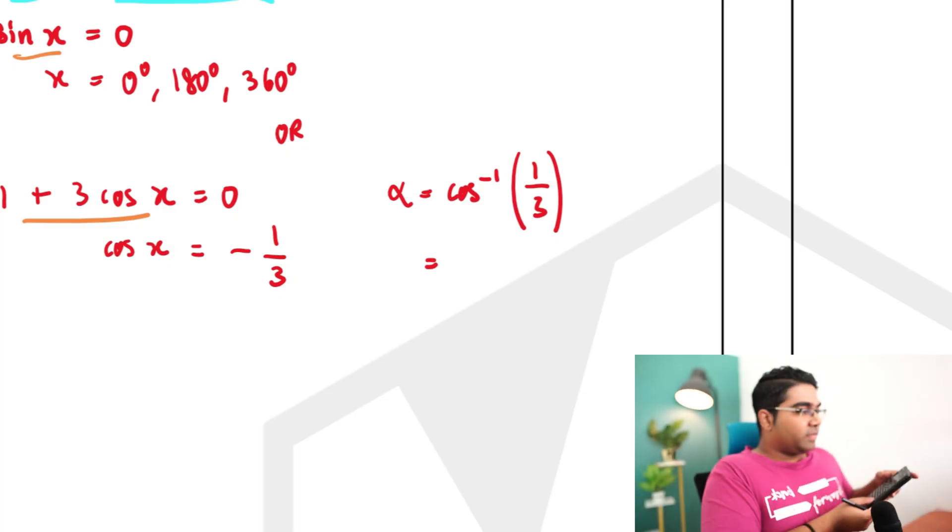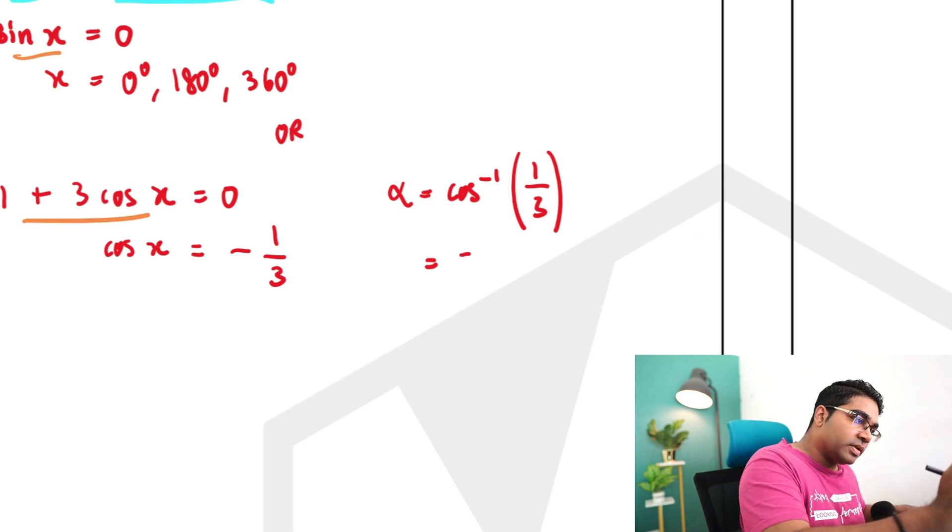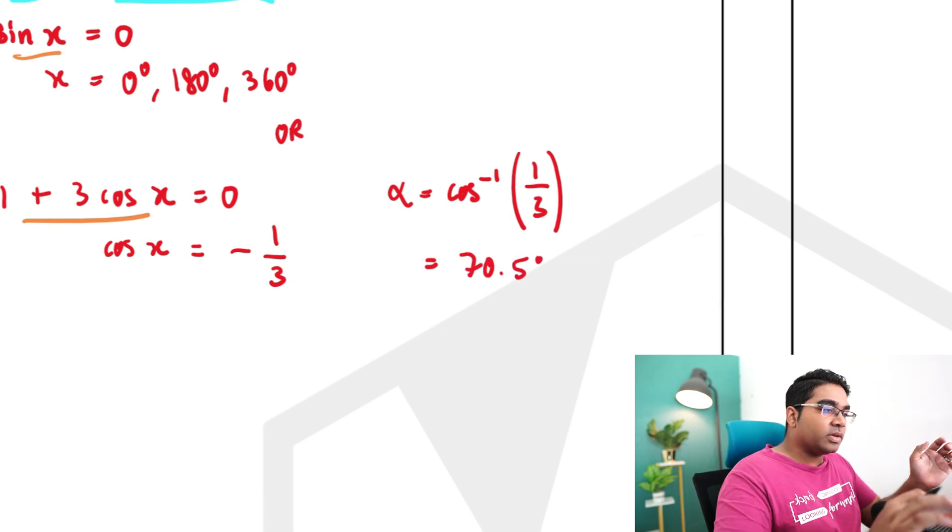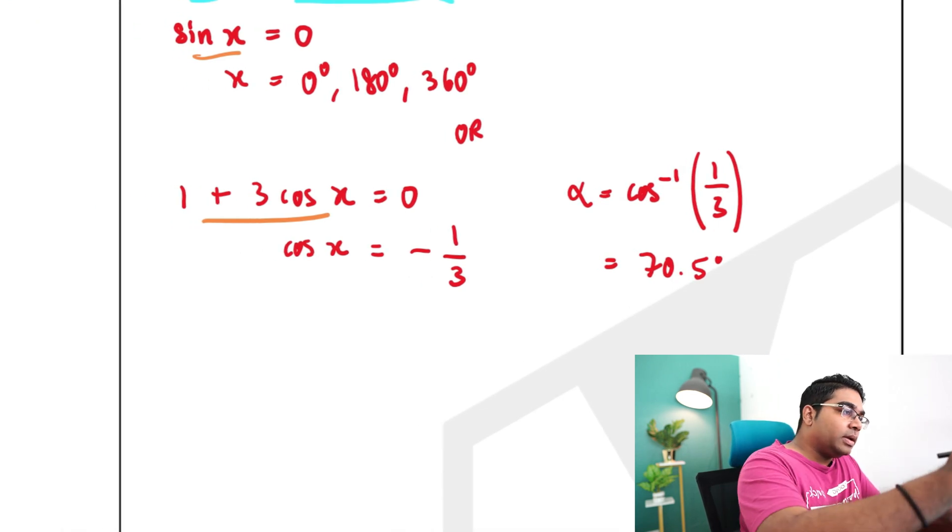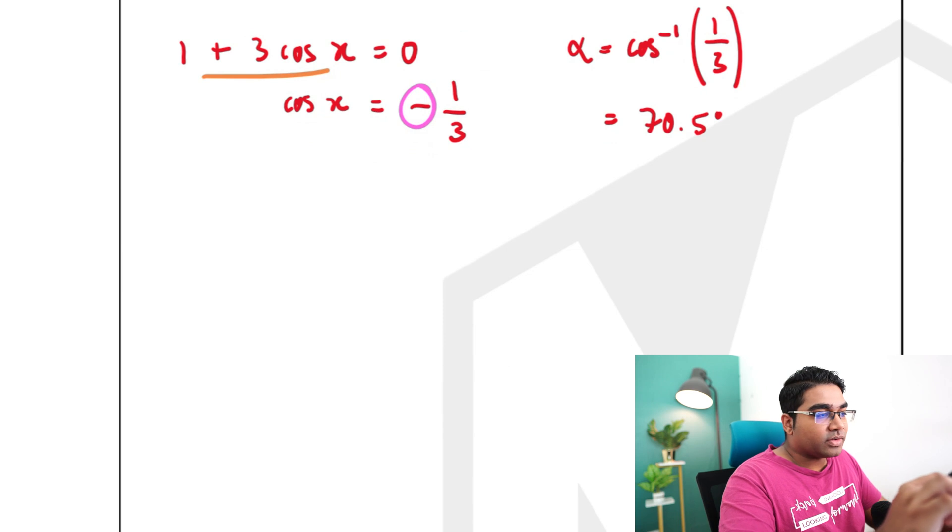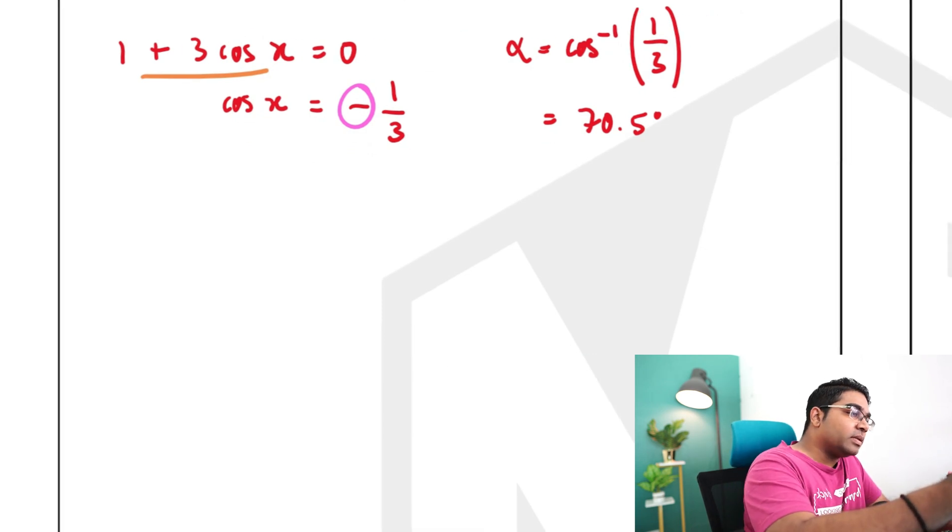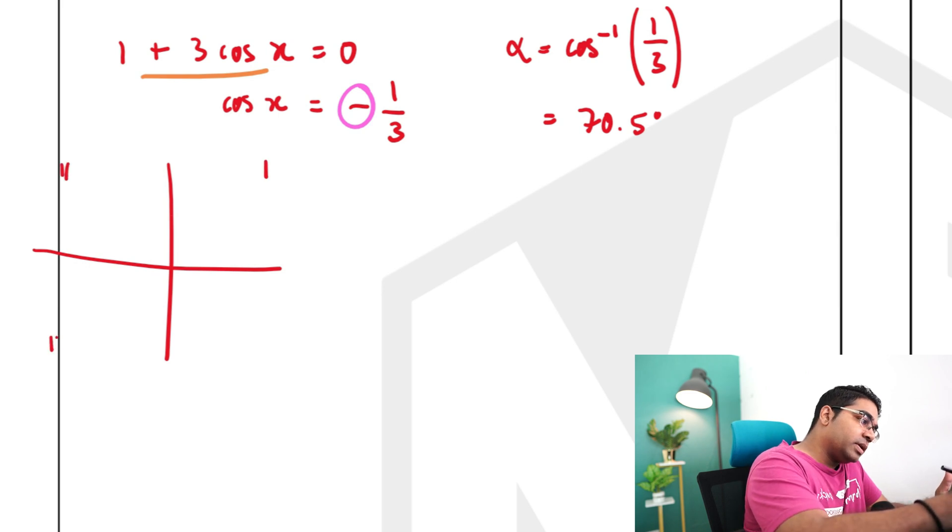Once we have alpha, this is 70.5 degrees. Now we make use of the sign. So the sign here is negative. If cos of x is negative, if cosine of x is negative, let's draw our quadrants, sketch our quadrants. So this is quadrant 1, 2, 3 and 4.